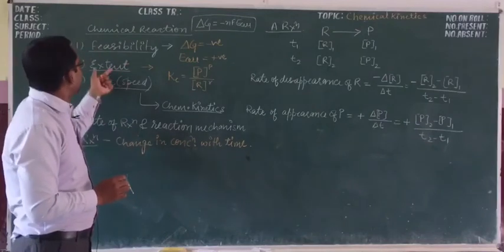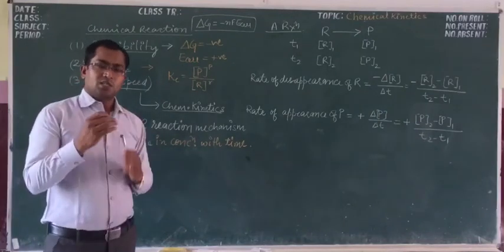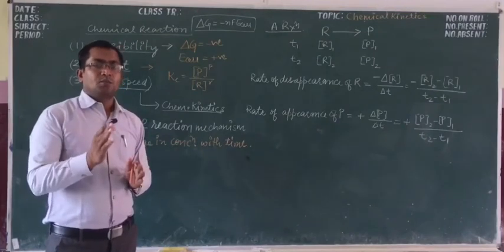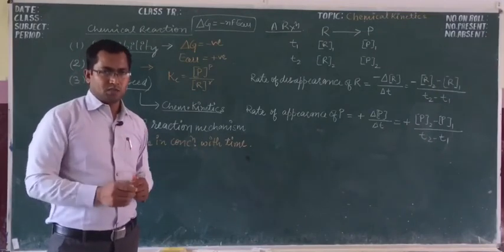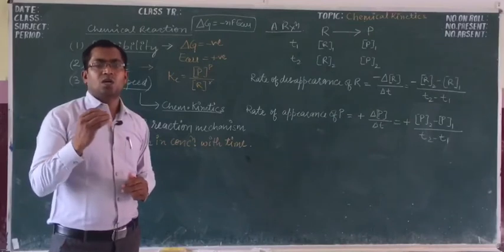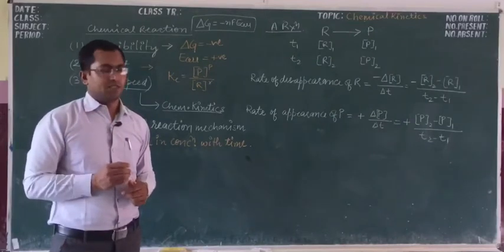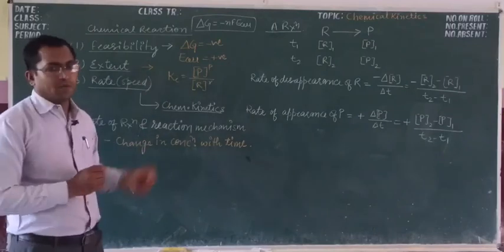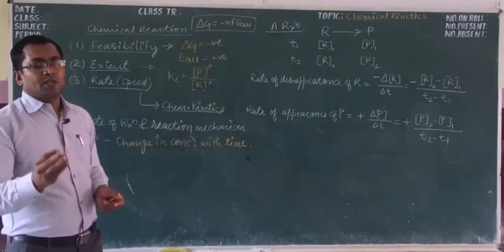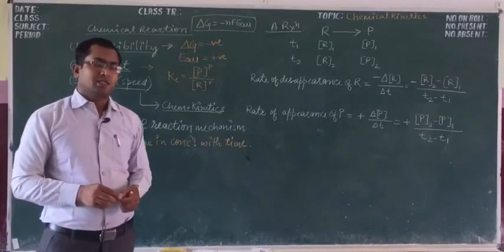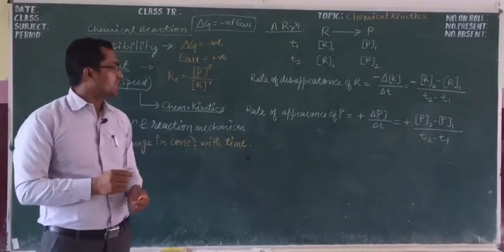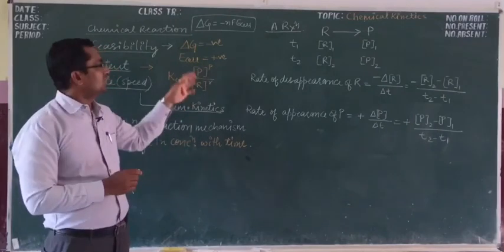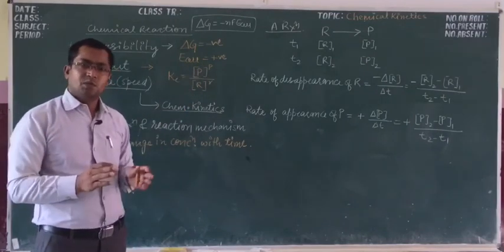After that we look at the extent of reaction — we know the reaction is spontaneous, but to what extent will it proceed, meaning to what percentage it will get completed. For that you have to look at equilibrium. Equilibrium tells us how far the reaction will go, to what extent it will proceed. The equilibrium constant gives us this answer. These two things we have already studied in previous classes.